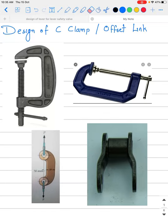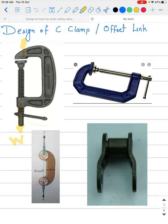Today we are going to see the design of a C-clamp or offset link. As the name suggests, the link has a C-shape — it is also called a G-clamp. The load is eccentric or offset to the main link, which is why it is called an offset link. Most of the time, tensile stresses are induced at the loading points of these clamping devices.